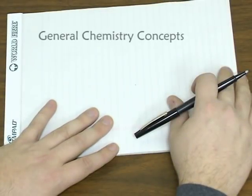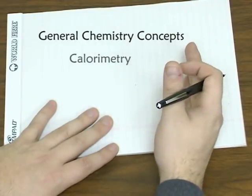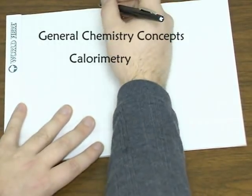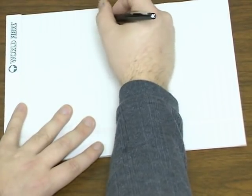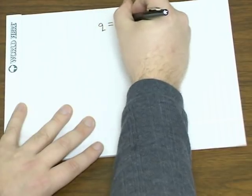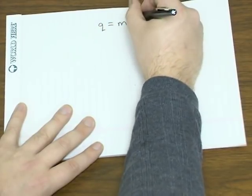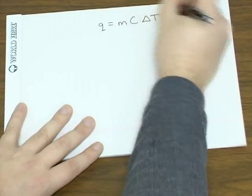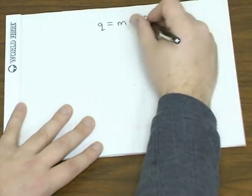Calorimetry is the study of heat. And one common equation that you use for calorimetry is Q equals MC delta T.